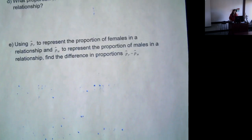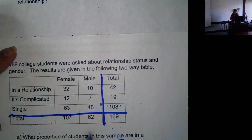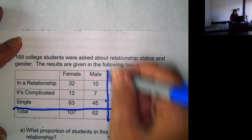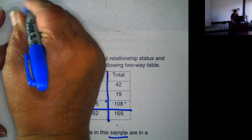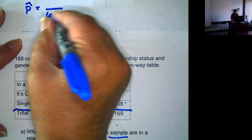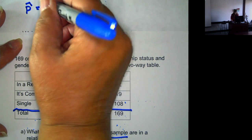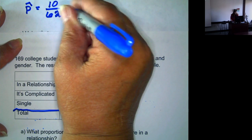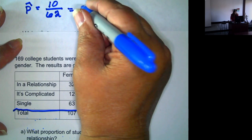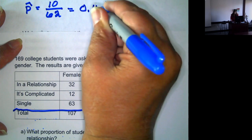Now let's look at what proportion of males are in a relationship. Now when we're talking about proportion of males, we're just looking at the column for males. And there are 62 males. Of those 62, 10 say that they are in a relationship. So that is 0.161.